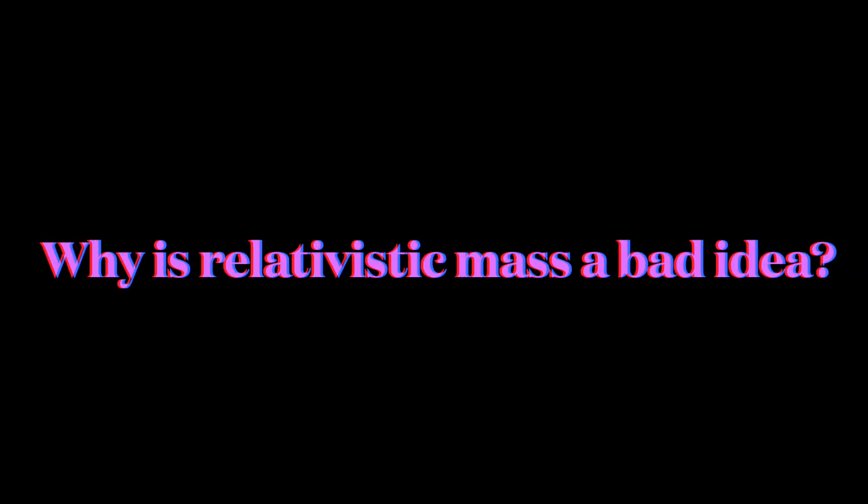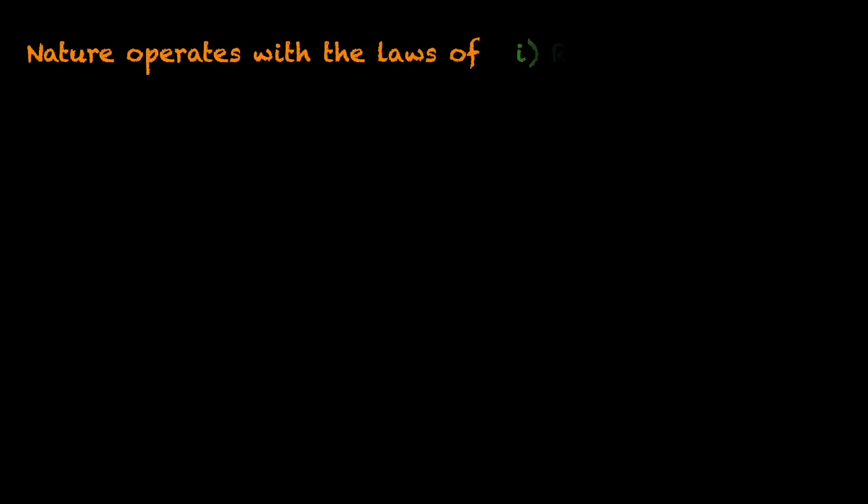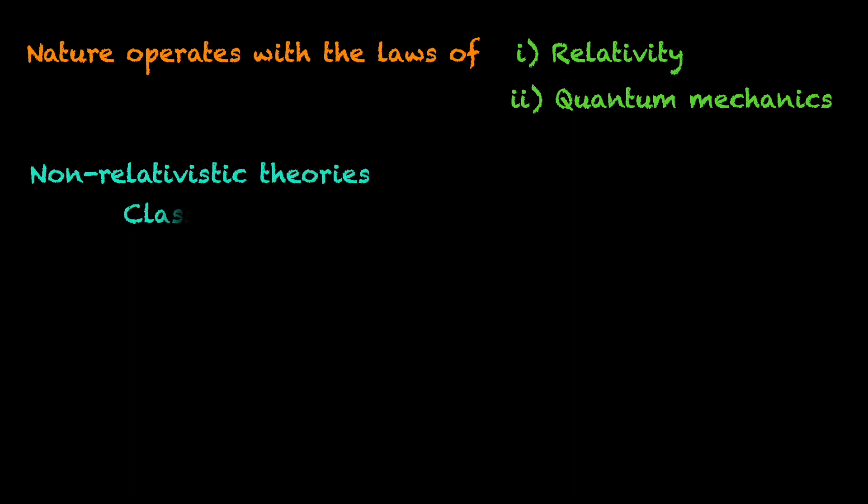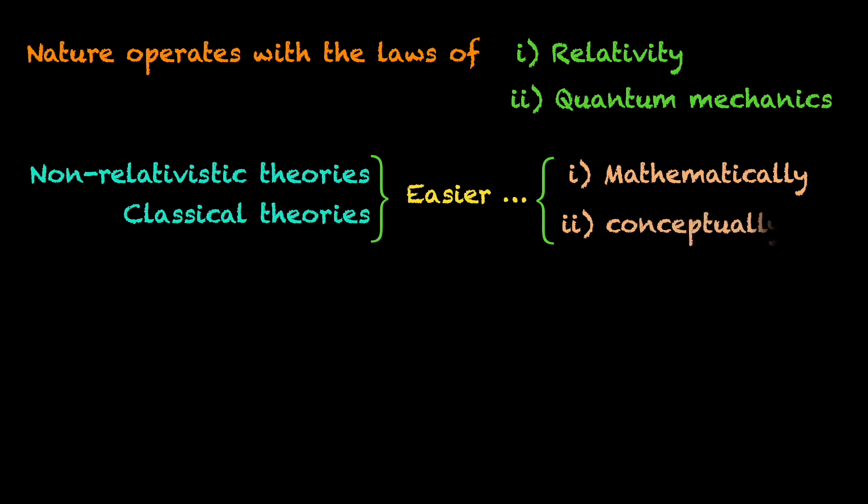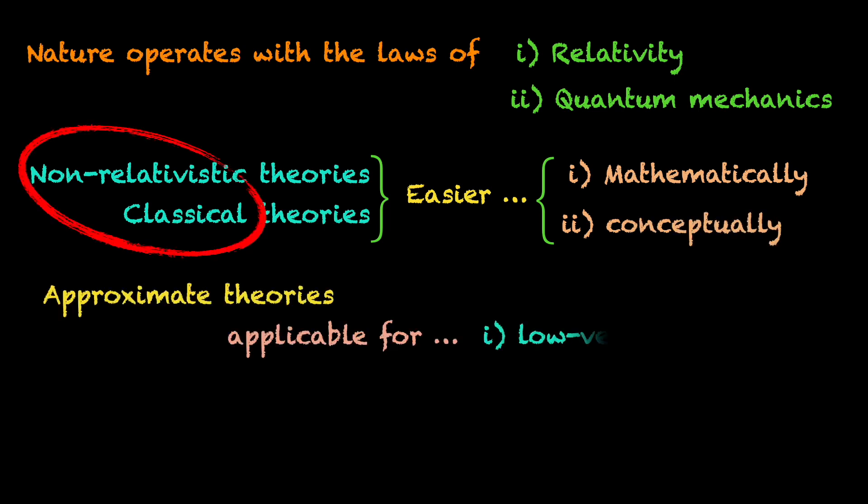We should not rely on this idea of a relativistic mass beyond the context of solving classroom problems in mechanics. Why not? Because, fundamentally, nature follows the laws of relativity and quantum mechanics. The non-relativistic classical physics is mathematically easy to use and conceptually easier to understand,